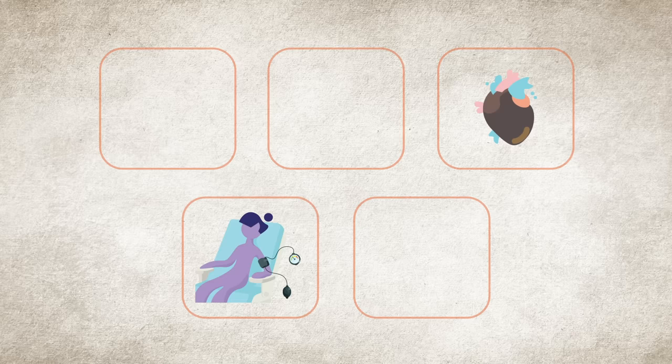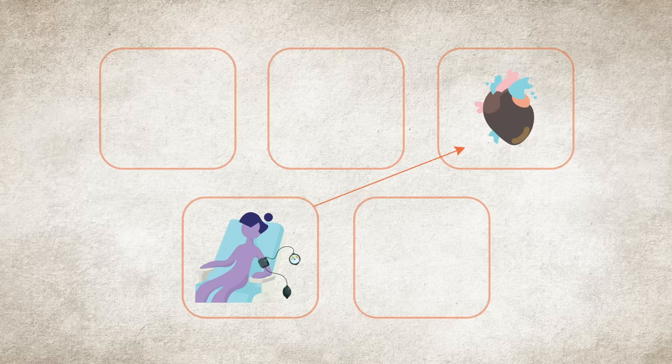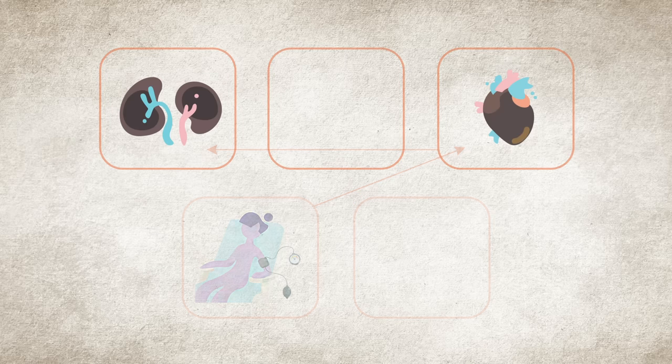With high blood pressure, your heart works harder to pump blood, which can strain your heart and blood vessels. This includes the vessels in your kidneys, leading to kidney damage.